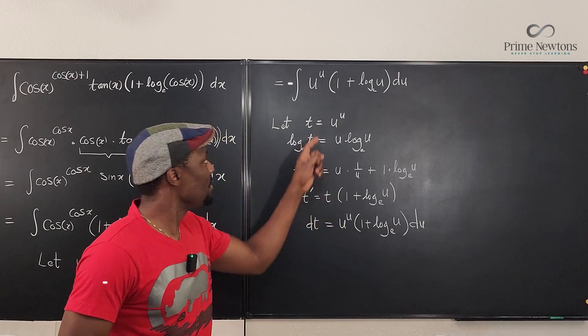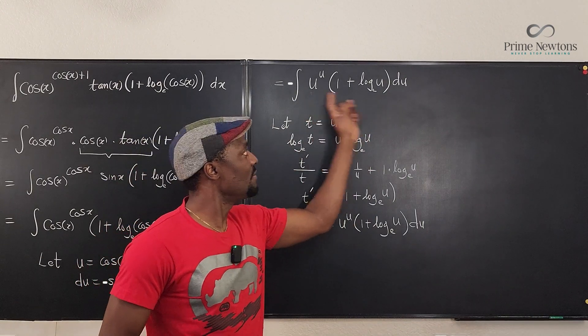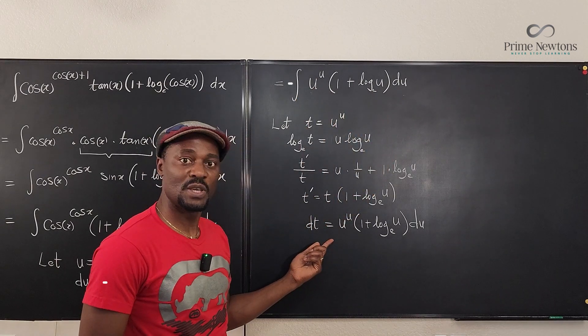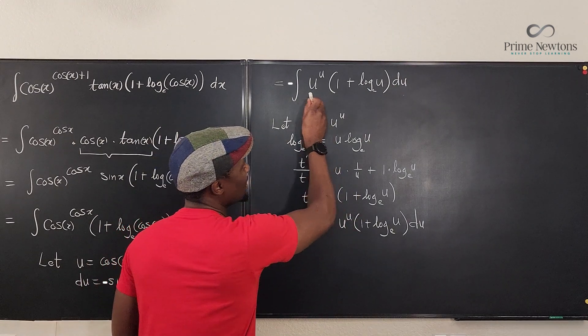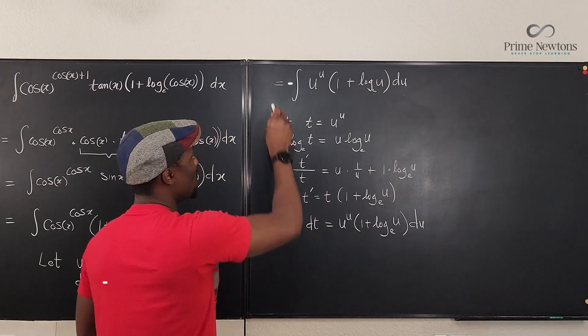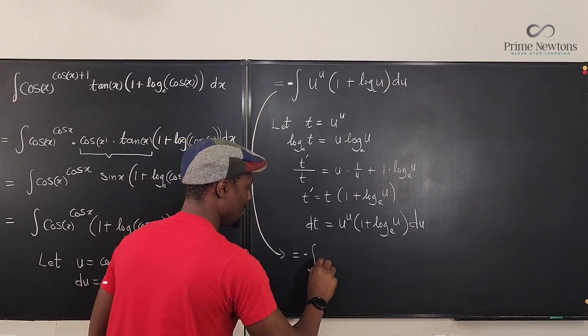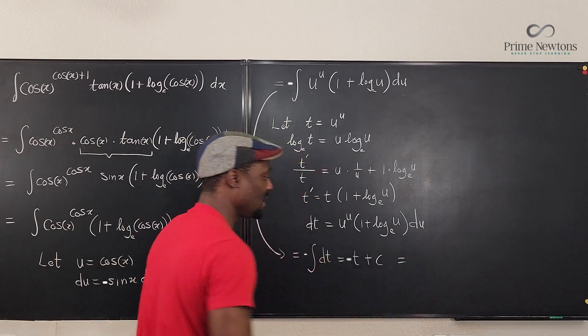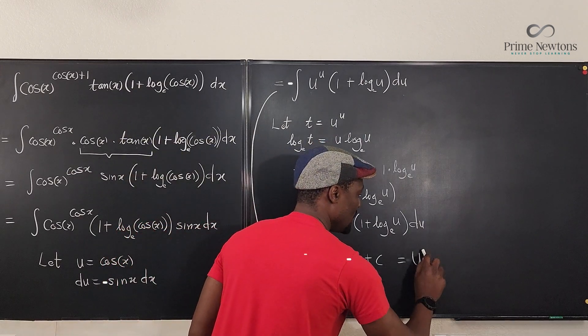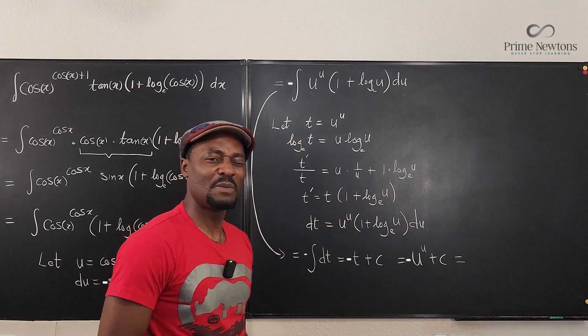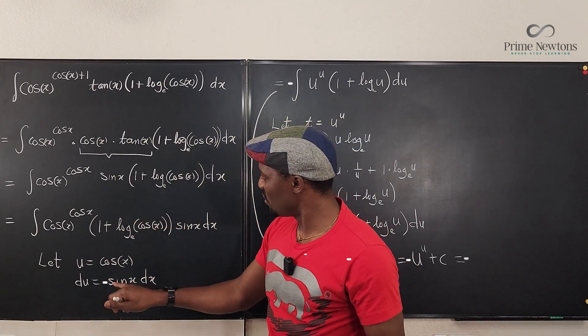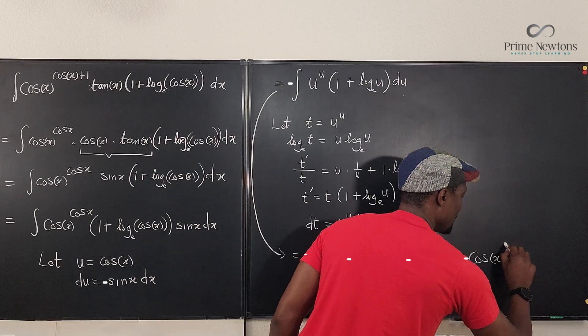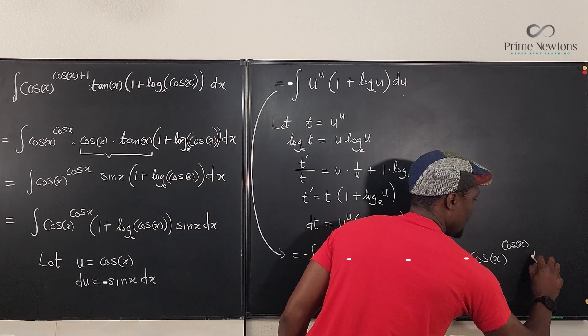So as you can see from experience, if this was a competition, you already know that the derivative of this, I mean, the integral of this expression du is just u to the u. And that's what we're going to do here. Because now when I go back, I know that this whole expression is dt. So this is equal to the integral of dt, which is equal to t plus c. But what did we say t was? t is u to the u, which is u to the u plus c, which is equal to what was u from the beginning. This whole thing was about x. We said u was cosine x. So our answer is cosine x raised to power cosine x plus c.